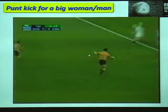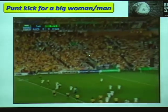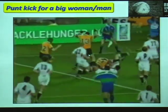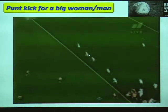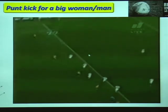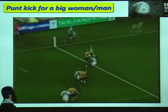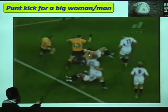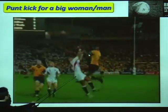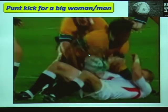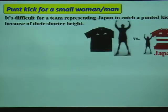This is the ideal strategy. A punted kick by an Australian player was caught by an Australian player. That kind of catch is quite difficult — there is a high difference in height.